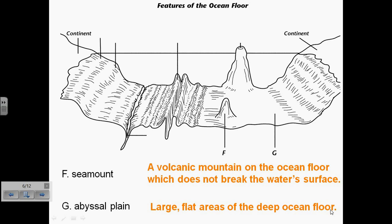Next, we have F and G, respectively. F is labeled as a seamount, and a seamount is a volcanic mountain on the ocean floor which does not break the water's surface. So it's an underwater mountain, if you will.